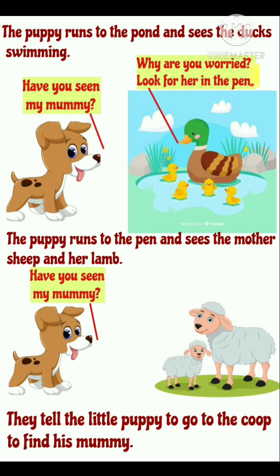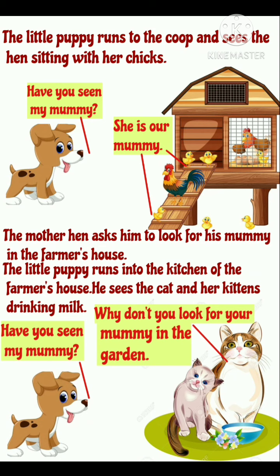Coop hen के घर को बोलते हैं. अब वो little puppy coop की तरफ दौड़ता है और वहाँ पर hen को अपने chicks के साथ बैठे हुए देखता है. उनसे पूछता है — Have you seen my mommy? इस पर chicks थोड़े परेशान हो जाते हैं और कहते हैं — She is our mommy! The mother hen asks him to look for his mommy in the farmer's house. Mother hen puppy को कहती है — अपनी mummy को farmer के घर में ढूंढो.